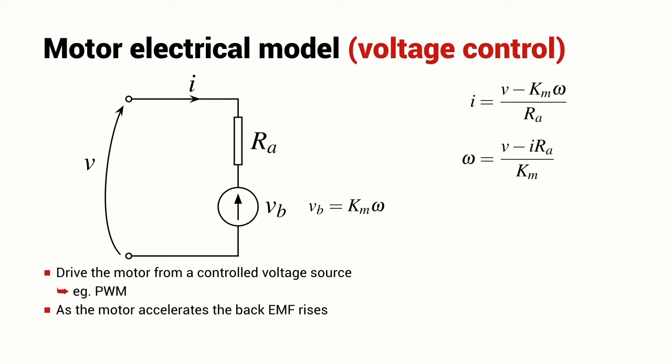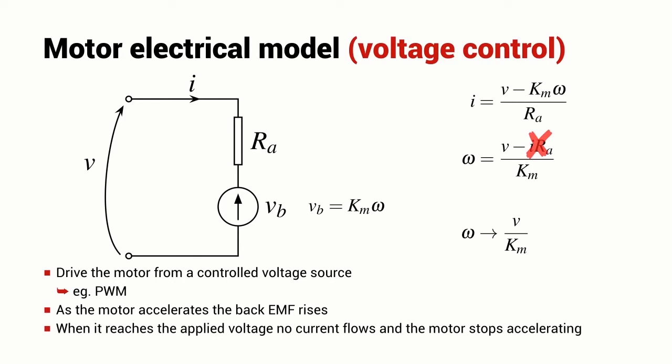Eventually the back EMF will be equal to the applied voltage and then no current will flow into the motor. The motor will then stop accelerating and when this occurs we have a simple expression for omega. It's the applied voltage divided by the motor constant.